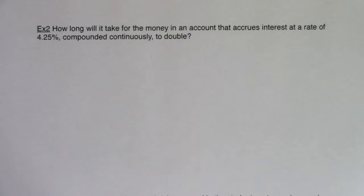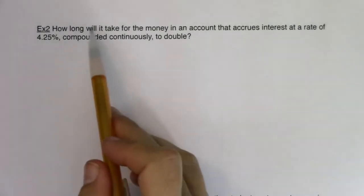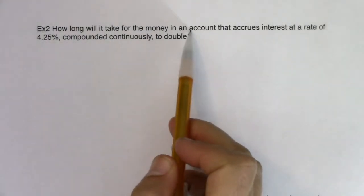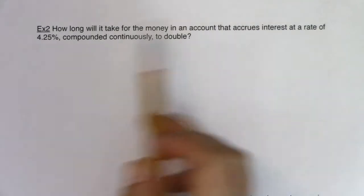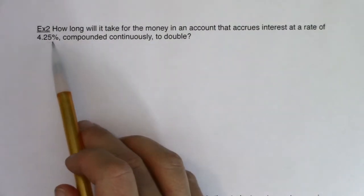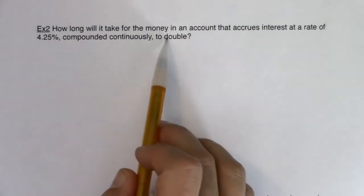Hey MAT31, welcome to example two. So we're being asked how long will it take for the money in an account that accrues interest at a rate of 4.25% compounded continuously to double.